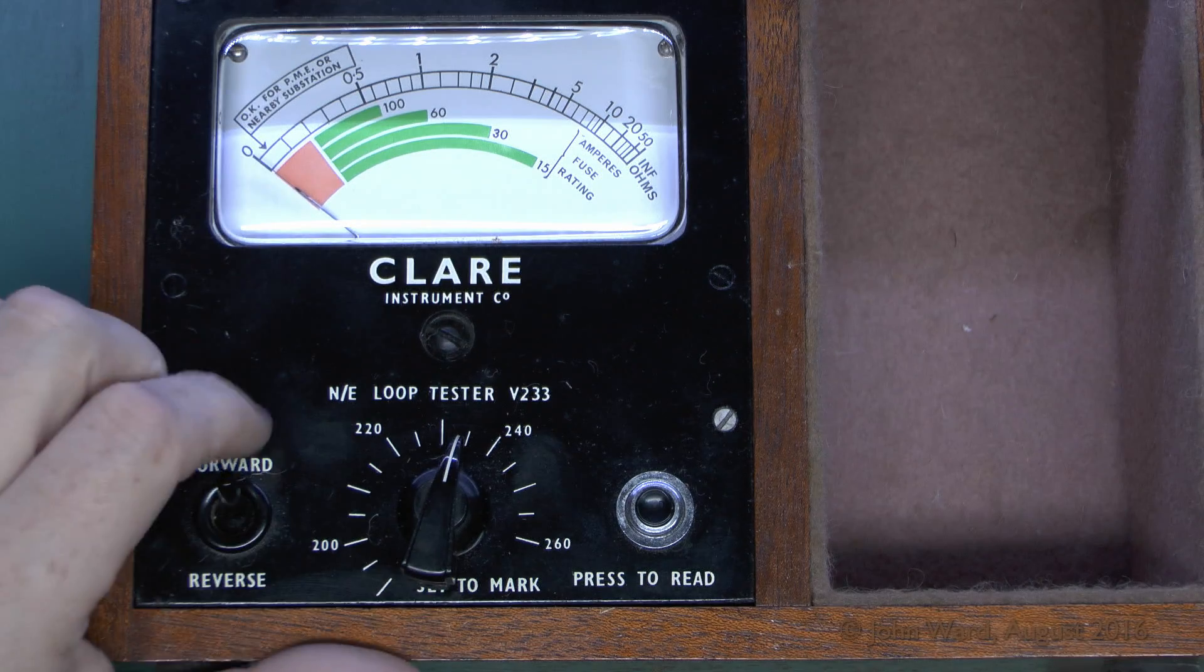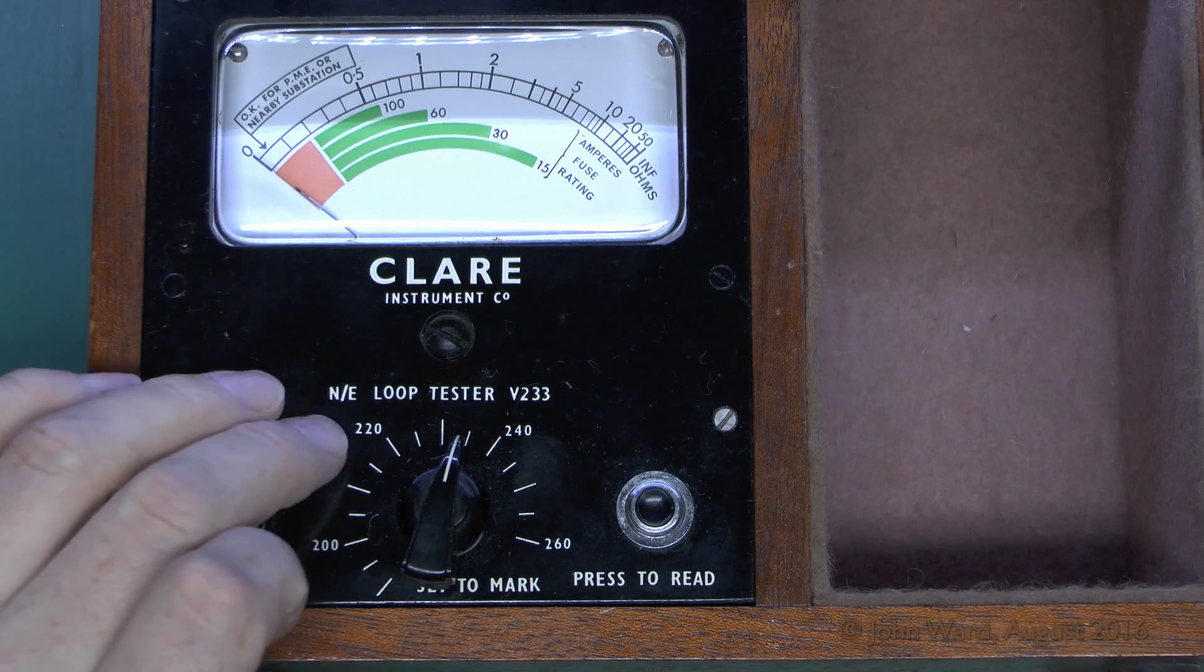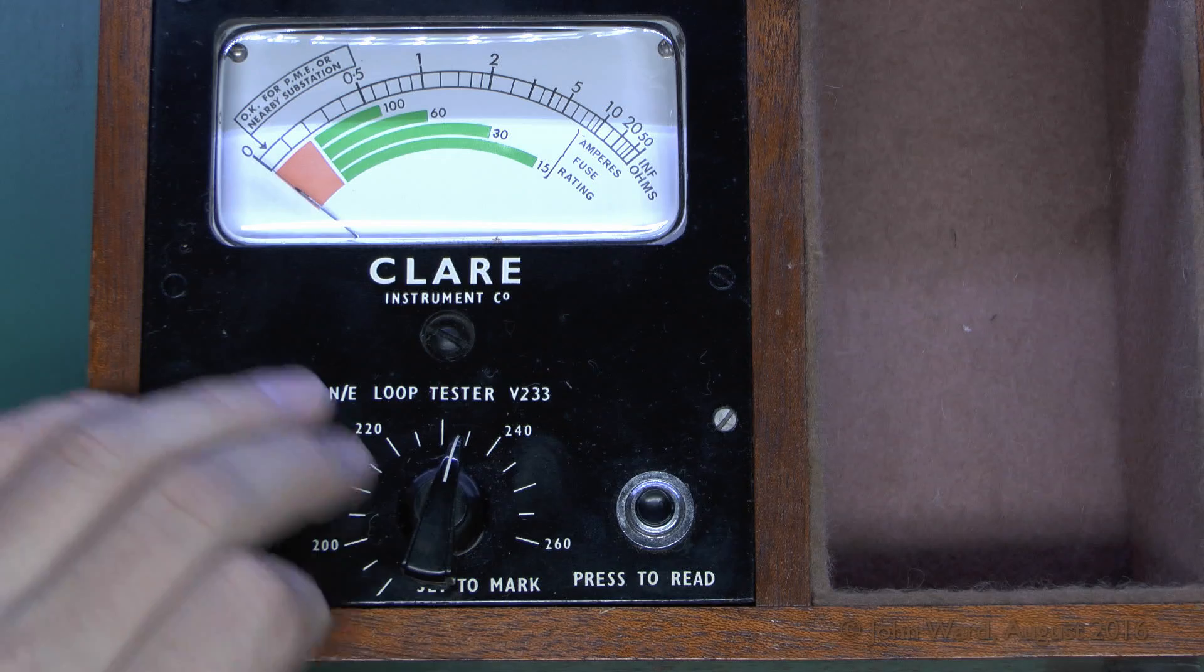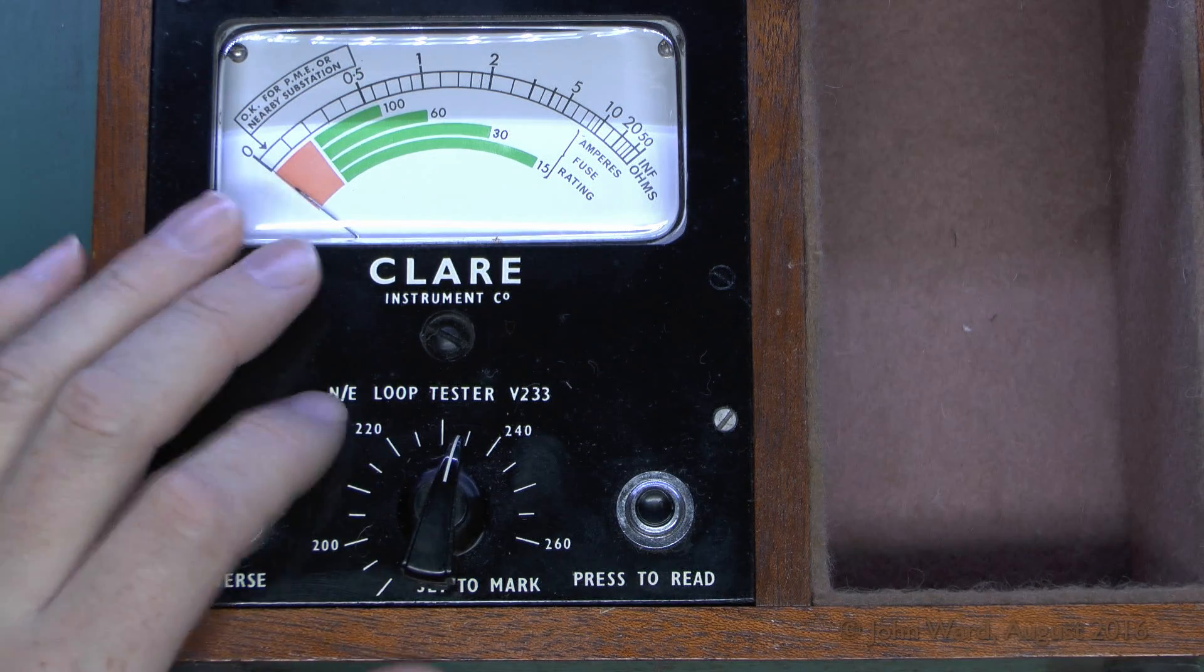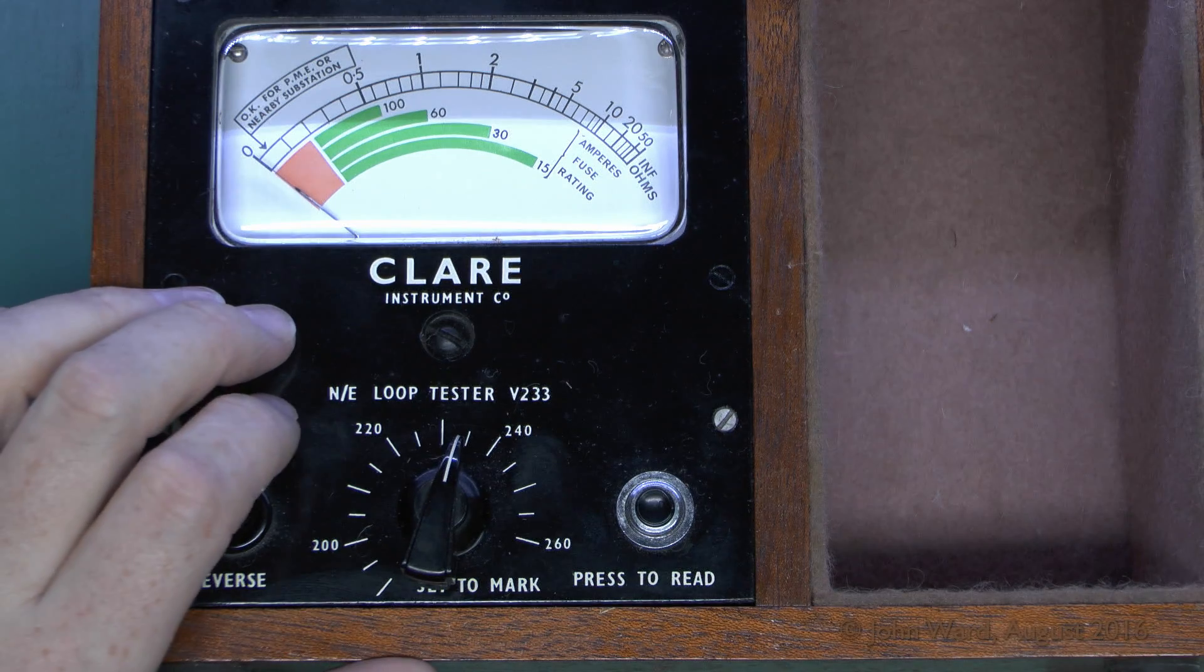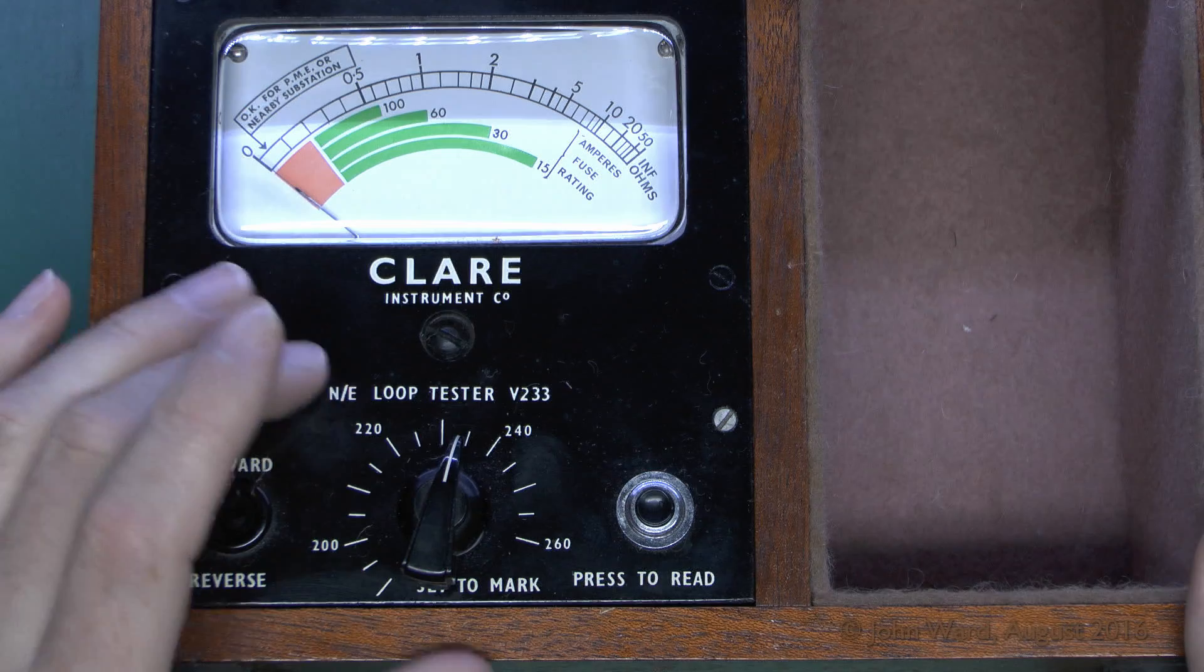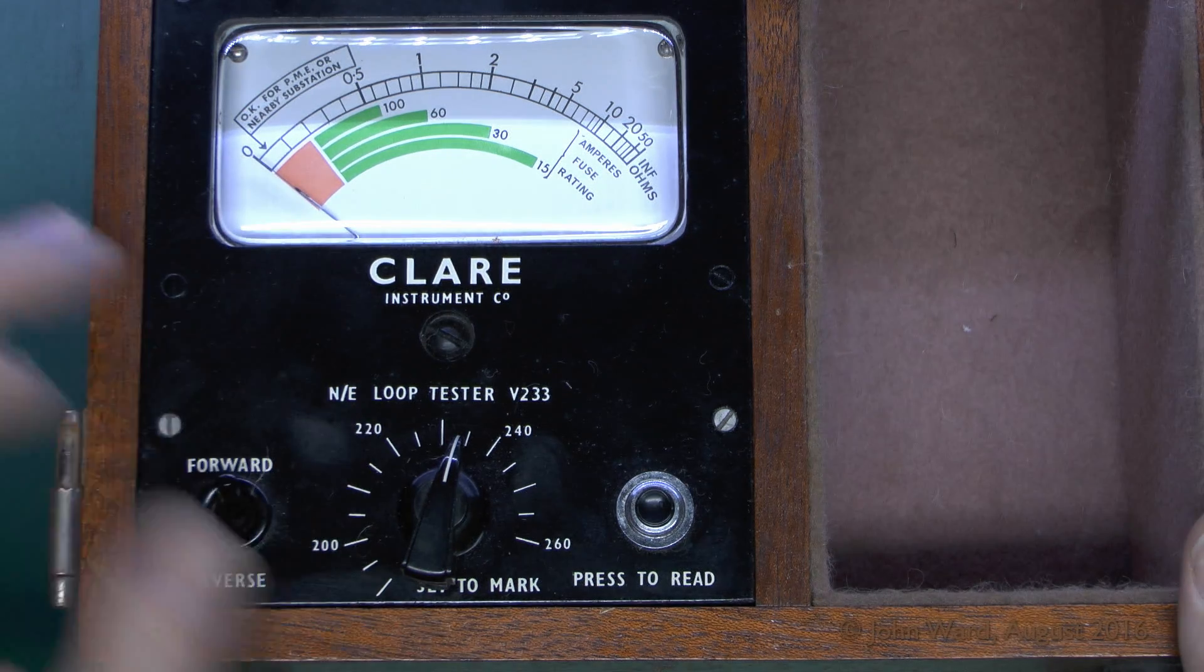So essentially it's putting a voltage there, and it's actually then measuring the current which flows. This is a test which you wouldn't normally do these days, mainly because the newer equipment is a line earth loop tester, or in some cases a line neutral one. For those you've got the mains power there already, and with those it's normally the case you're just applying a fixed resistance across that and measuring the voltage drop. But this one is somewhat more unusual.